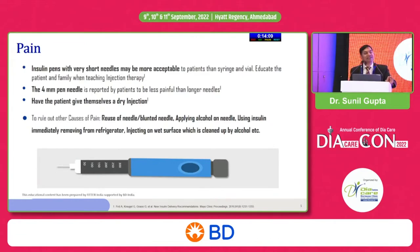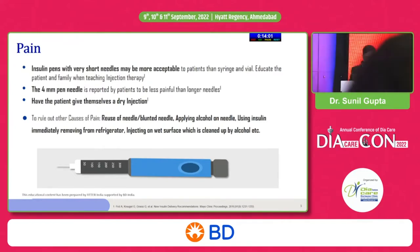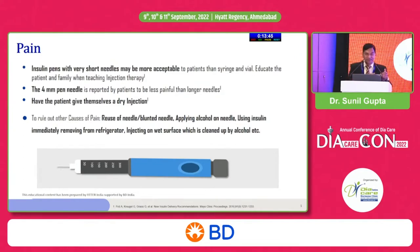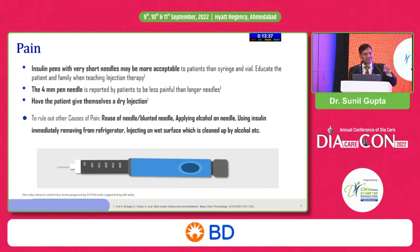There may be other causes of pain. If a patient already on insulin suddenly stops, find out why. If they say the reason is pain, consider: reusing the needle multiple times makes it blunt, causing pain. Applying alcohol to the needle destroys its silicone coating, making it blunt. Also, using insulin immediately from the fridge — cold insulin going inside — is called cryo trauma and causes pain. Allow insulin to reach room temperature before injecting.